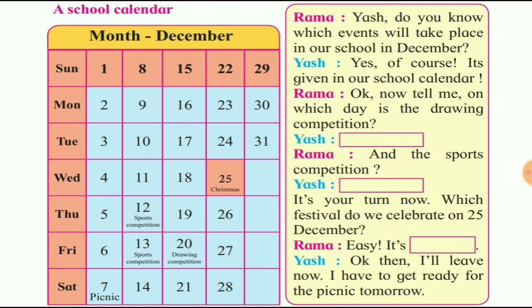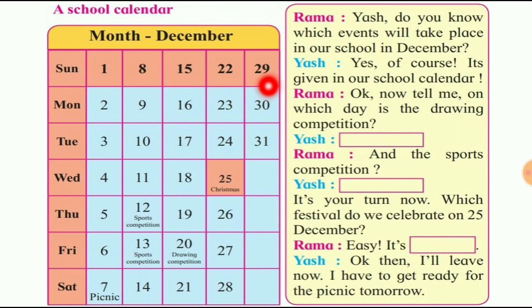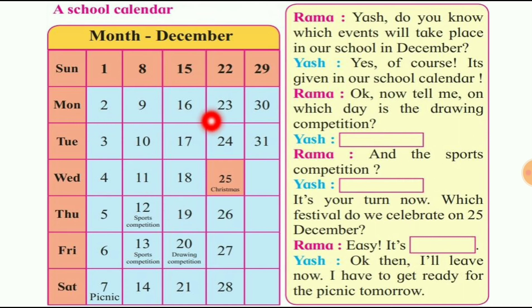Sunday dates: 1st, 8, 15, 22, and 29 — that means 5 Sundays in December month. Monday dates: 2nd, 9, 16, 23, 30 — 5 Mondays in December month.